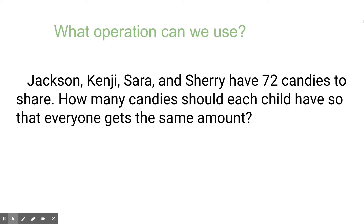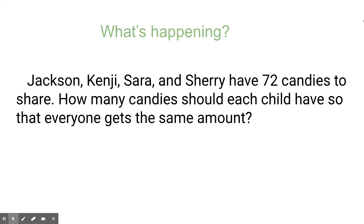What operation can we use? What's happening? Jackson, Kenji, Sarah, and Sherry are children that are sharing. Everyone gets the same amount. Everyone should have the same number of candies after they're shared, and there are 72 candies to share.